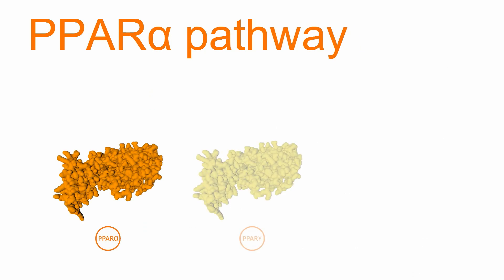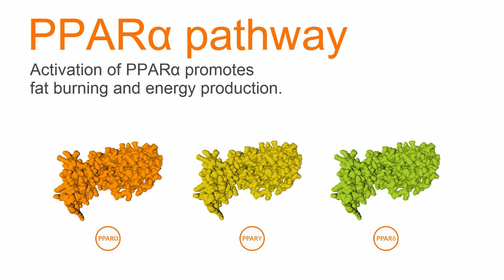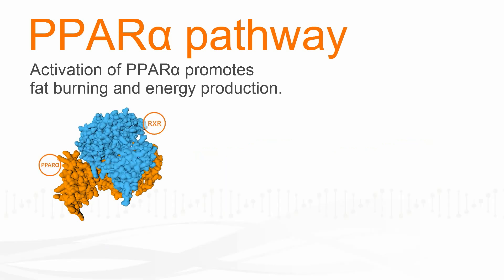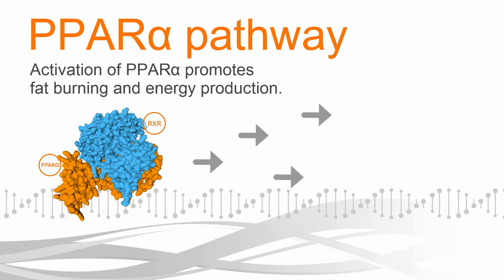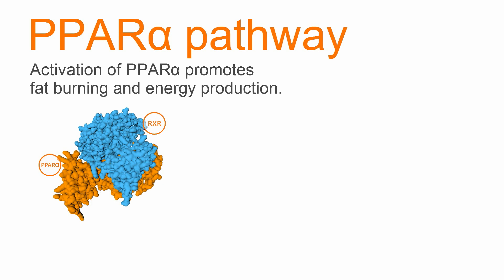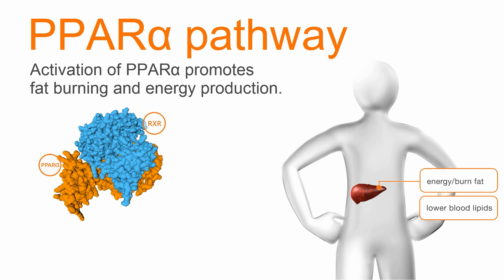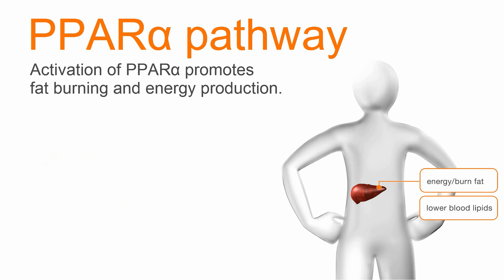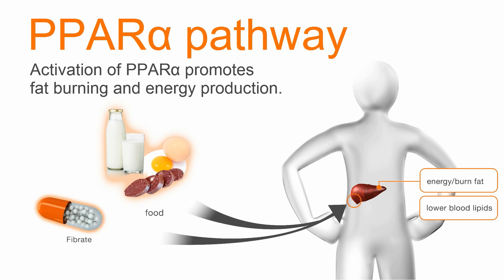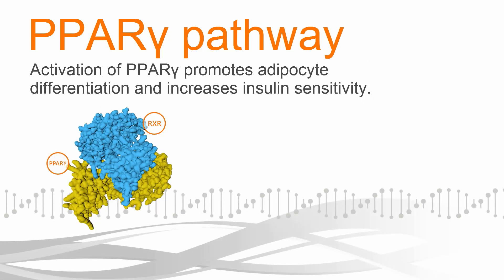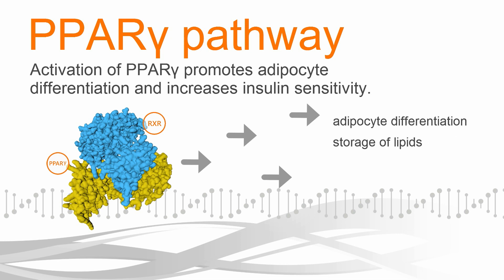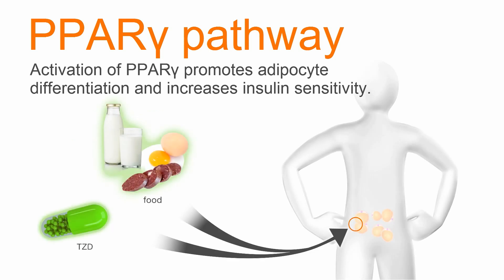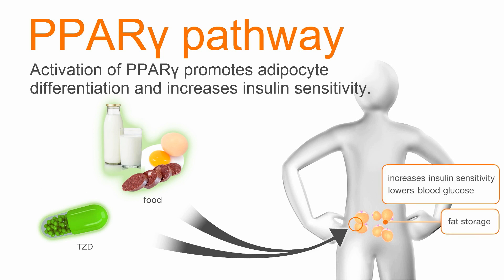There are three major PPARs. PPAR-alpha is a master regulator of nutrient metabolism in the liver. Upon binding with its ligands, PPAR-alpha activates transcription of 200 to 300 genes, the majority of which are fatty acid catabolism enzymes that promote fat burning and energy production. PPAR-alpha is also the molecular target for the triglyceride-lowering drug Fibrate. PPAR-alpha is found primarily in adipose tissue. The activation of PPAR-alpha promotes adipocyte differentiation and storage of lipids, meanwhile increasing insulin sensitivity. Not surprisingly, PPAR-alpha is the molecular target for the popular type 2 diabetes drug TZD.